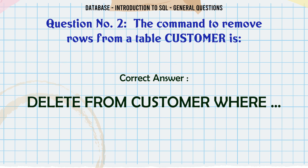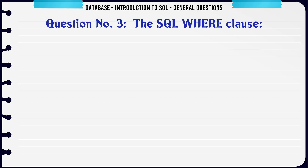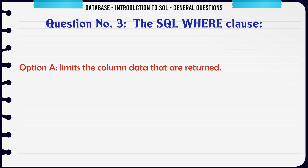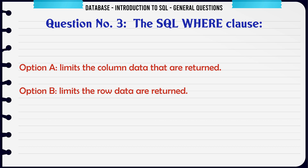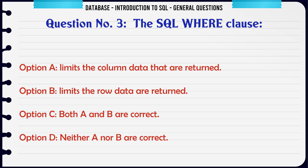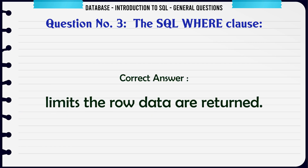The SQL WHERE clause: A. Limits the column data that are returned. B. Limits the row data that are returned. C. Both A and B are correct. D. Neither A nor B are correct. The correct answer is: limits the row data that are returned.